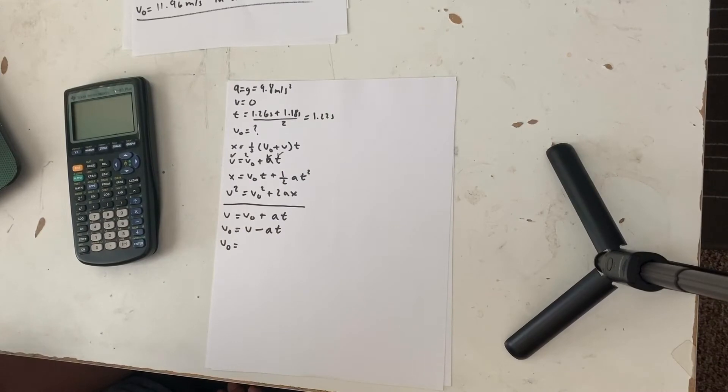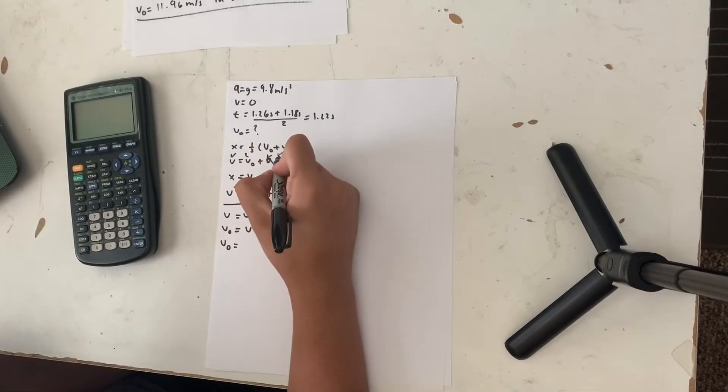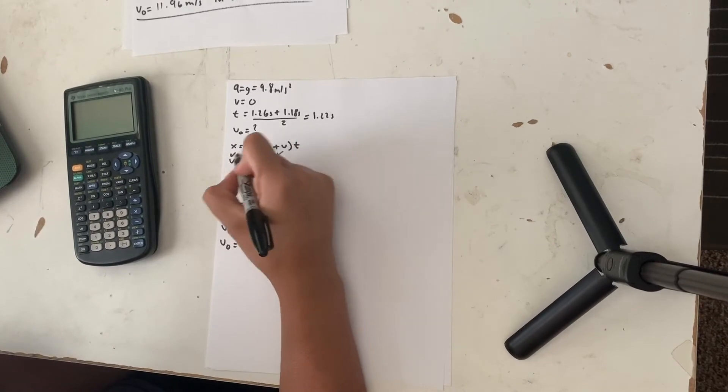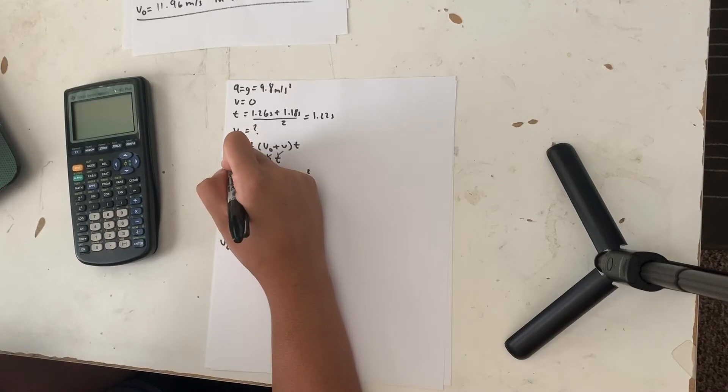So here's a list of the kinematic equations and I'm going to choose the one that best fits my problem. In the second one, I have a time, I have an acceleration and I have a final velocity. The only thing I don't have is an initial velocity, so I will use this problem.